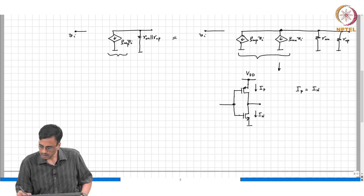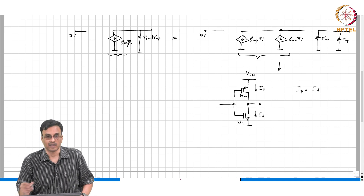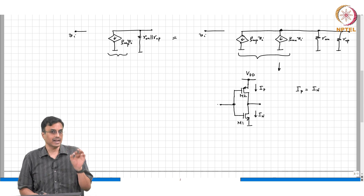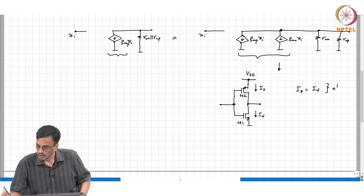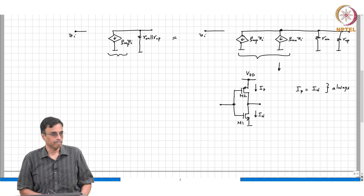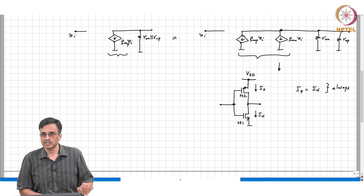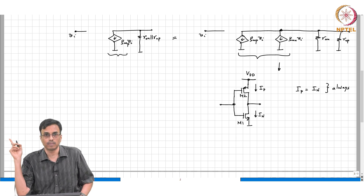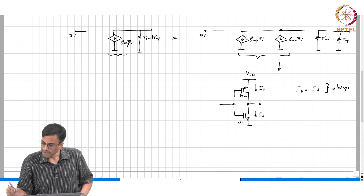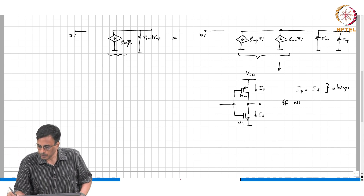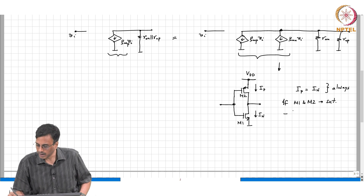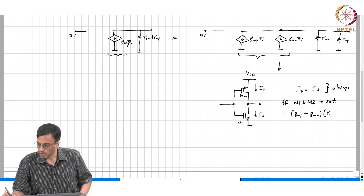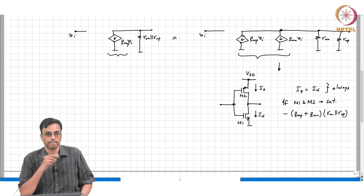If both transistors operate in saturation, the gain will be large. If M1 and M2 both operate in saturation, then the incremental gain is minus of (GMP plus GMN) times (R_naught_N parallel R_naught_P). In the special case of lambda equal to zero, the gain tends to negative infinity.